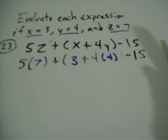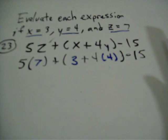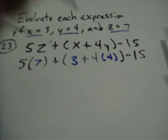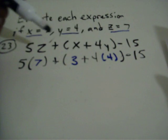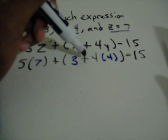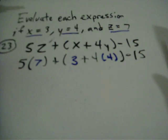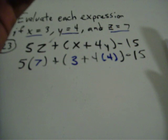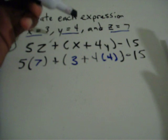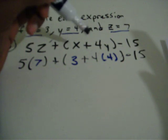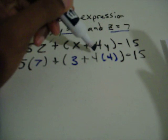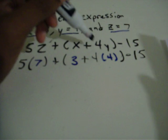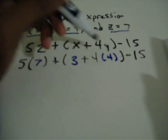You do have to know the order of operations before you can do this problem. With order of operations, we always do the parentheses first. So I look inside these parentheses and I have 3 plus 4 times 4. In order of operations, I have to do multiplying before adding. So even though the adding comes first, we don't do 3 plus 4 — we have to do multiplication before addition. So we do 4 times 4 here.